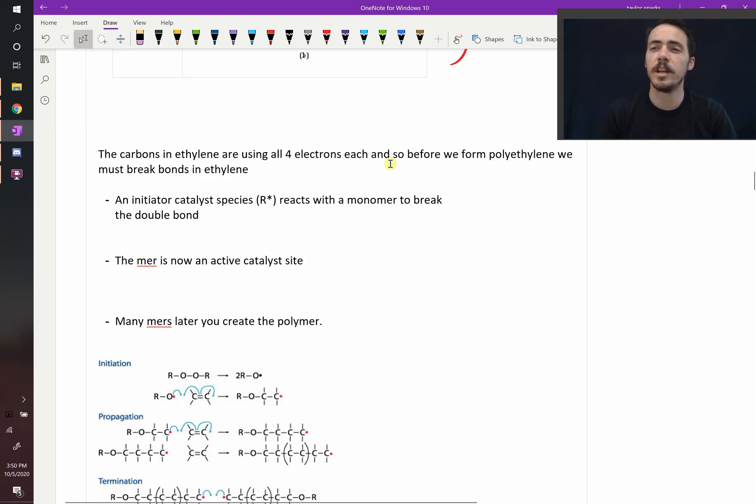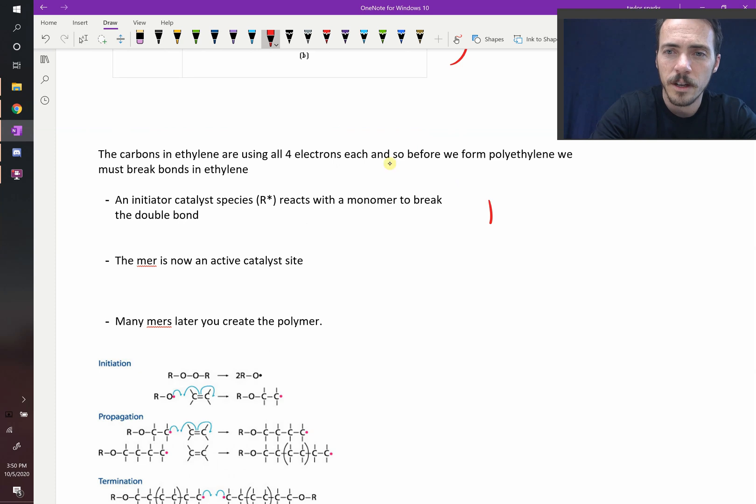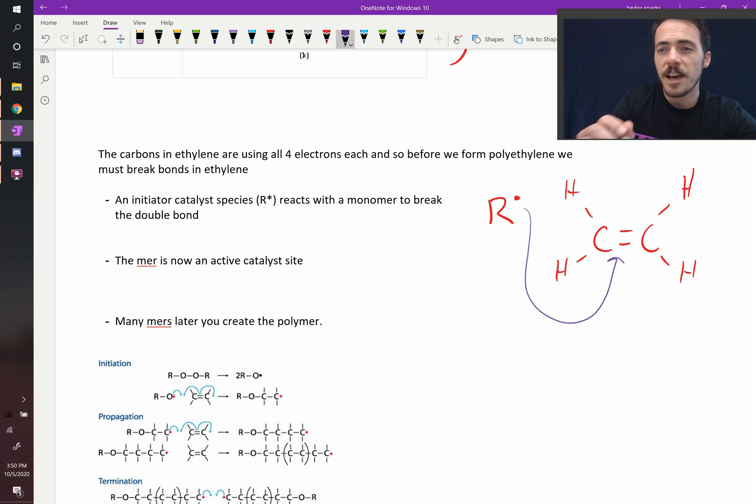You start out with an initiator catalyst species. They usually write this as R star or R dot, something like this. Something that has an electron that really wants to form a reaction. So the role of this reactor, this initiator, is to break the double bond that's initially present. So we initially had carbon double bonded to carbon with hydrogens off on the side like this in this planar configuration. So what happens is this initiator comes and it attacks that double bond. It steals it away. And you end up with this situation now.